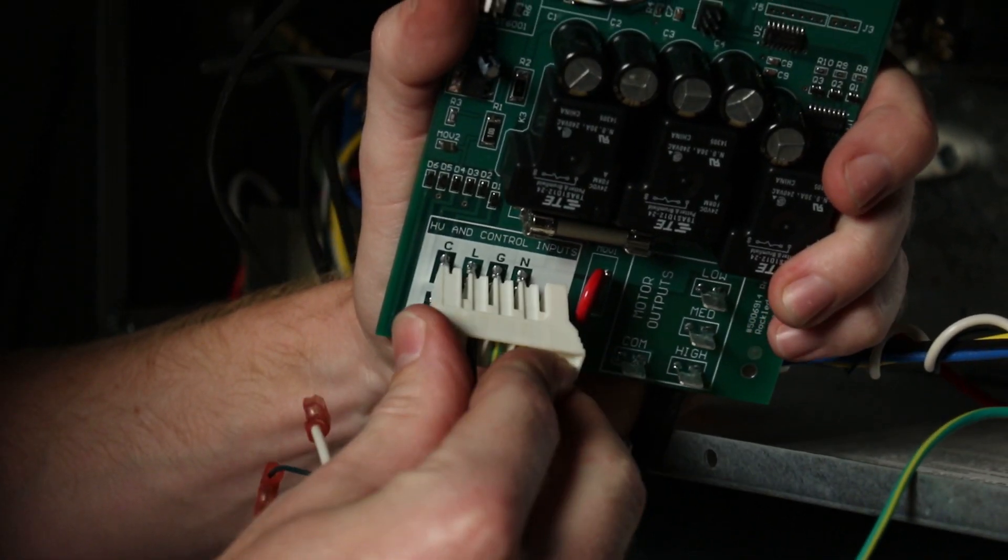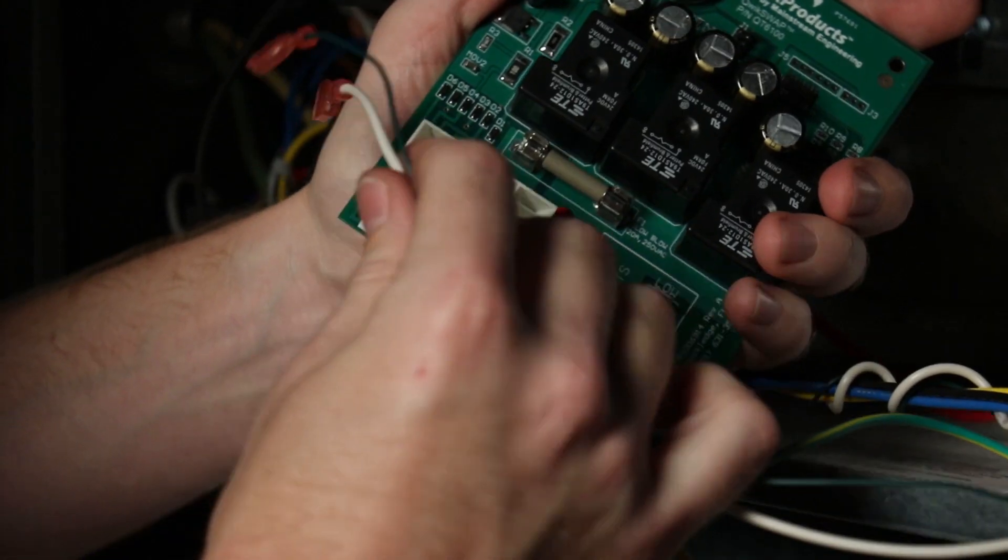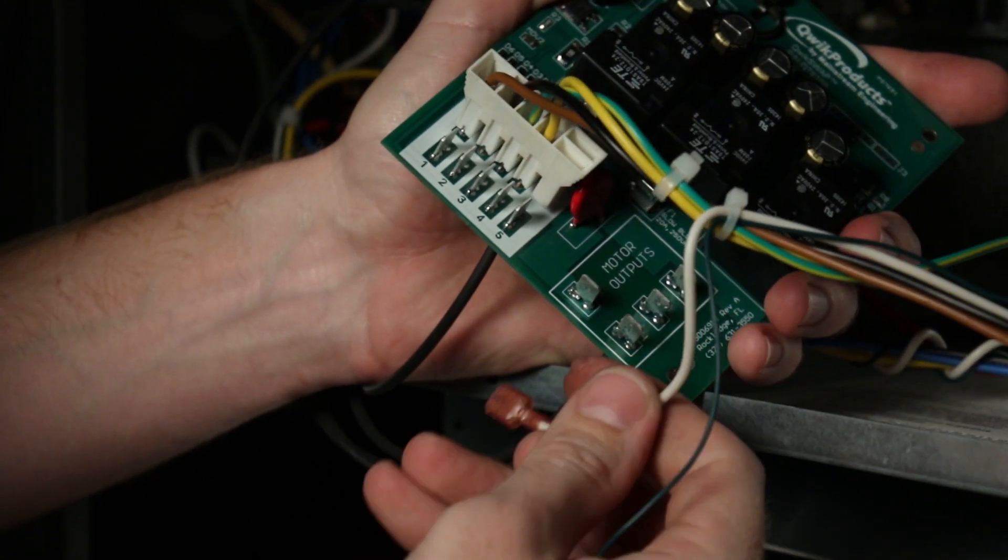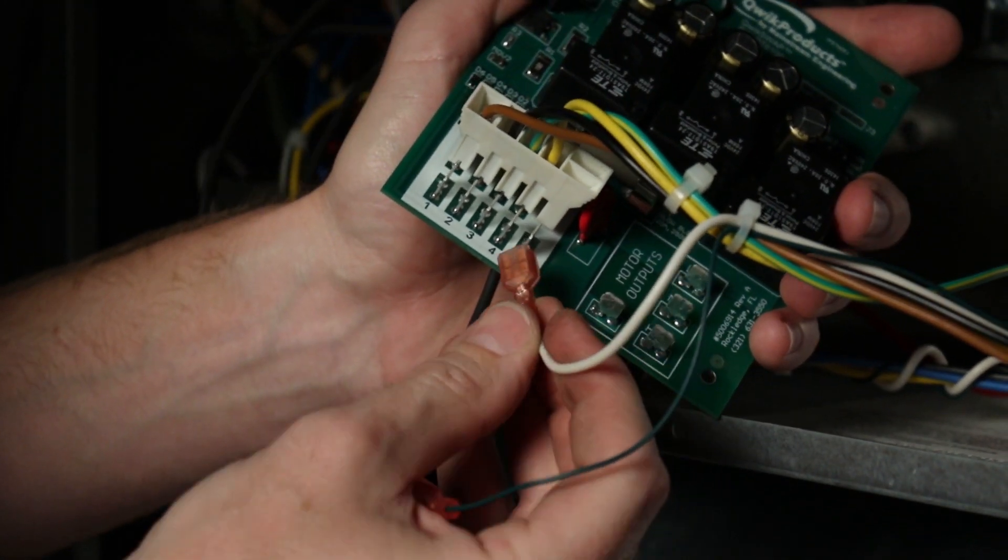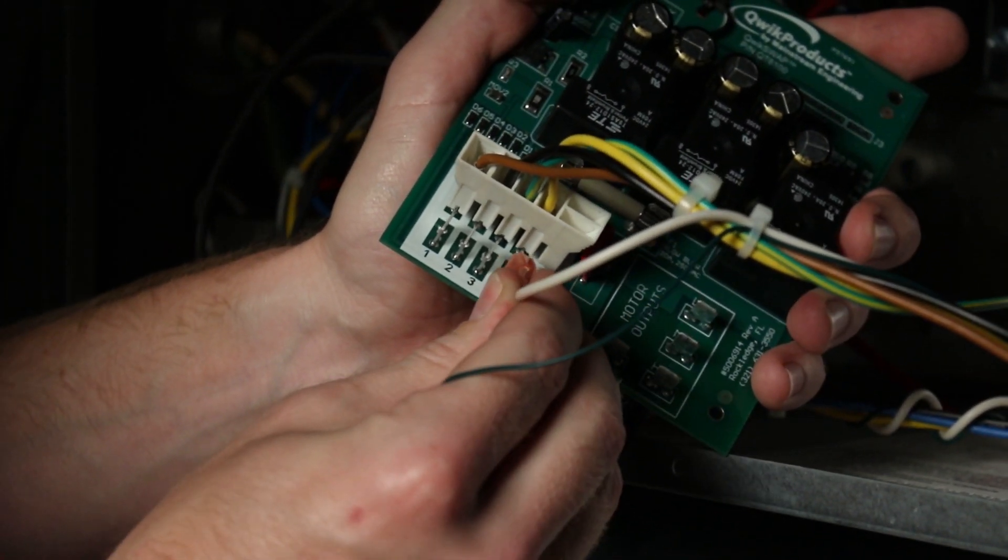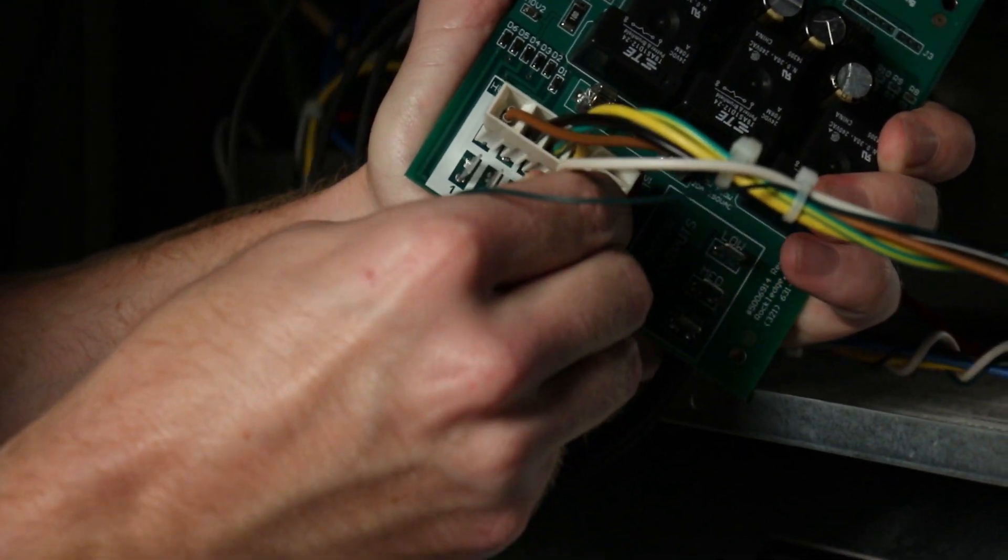Step seven: install the power and control wires that were removed from the old motor onto the matching terminals of the quick swap board. It is important that all of these terminals are fully insulated to prevent shorting between them.